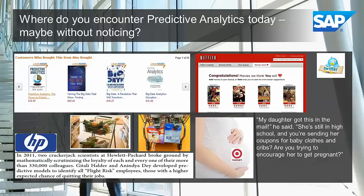Where do you actually encounter predictive analytics today? You have probably bought a book on Amazon. Once you go to that site and find a book, they often have a recommendation based on other people's purchases — you might also be interested in this. Behind the scenes, they could be using affinity analysis, a known algorithm that identifies patterns when you buy a certain kind of book.